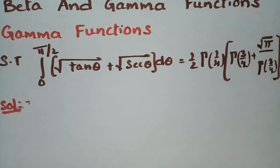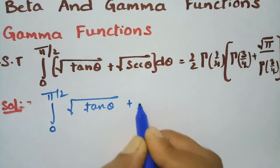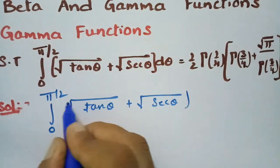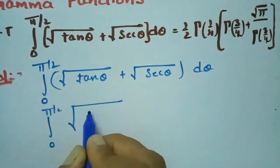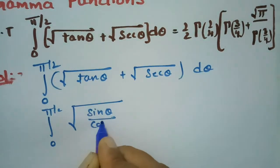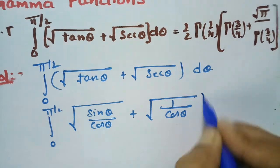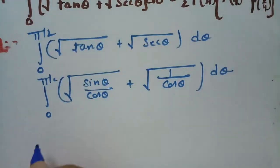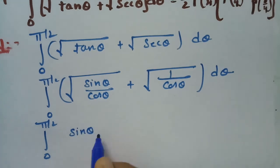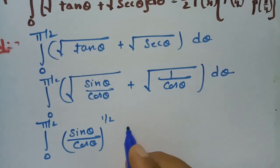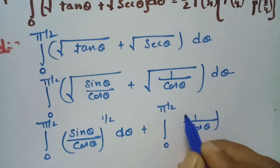Let's get started to solve. First of all, the given integral from 0 to π/2 of (√tan θ + √sec θ) dθ can be rewritten: tan θ can be written as sin θ / cos θ, and sec θ can be written as 1/cos θ. So this becomes the integral from 0 to π/2 of (sin θ / cos θ)^(1/2) dθ plus the integral from 0 to π/2 of (1/cos θ)^(1/2) dθ.